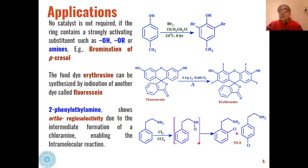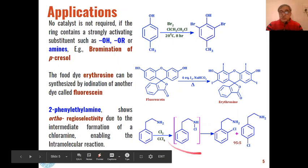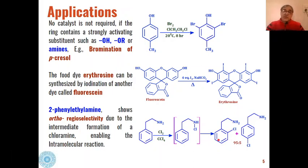Due to the stereochemistry of the substrate, the ortho product is predominantly formed — in 95% yield — while the para product is formed in only 5%. Therefore, 2-phenylethylamine shows ortho regioselectivity, attributed to the formation of the chloramine intermediate which enables intramolecular electrophilic aromatic substitution.